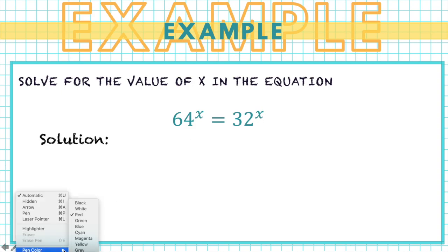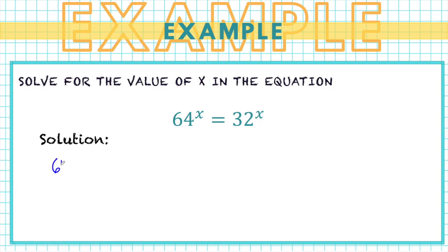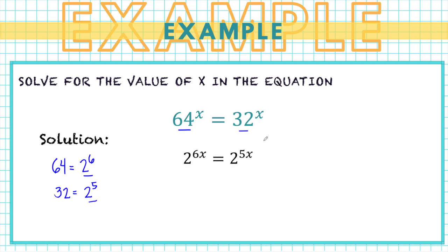To solve this, we have to first change both sides of the equation so that they will have the same base. We know that 64 is the same as 2 raised to 6, and 32 is the same as 2 raised to 5. Therefore, we can change 64 to 2 raised to 6 and 32 to 2 raised to 5, giving the equation 2 raised to 6x equals 2 raised to 5x.